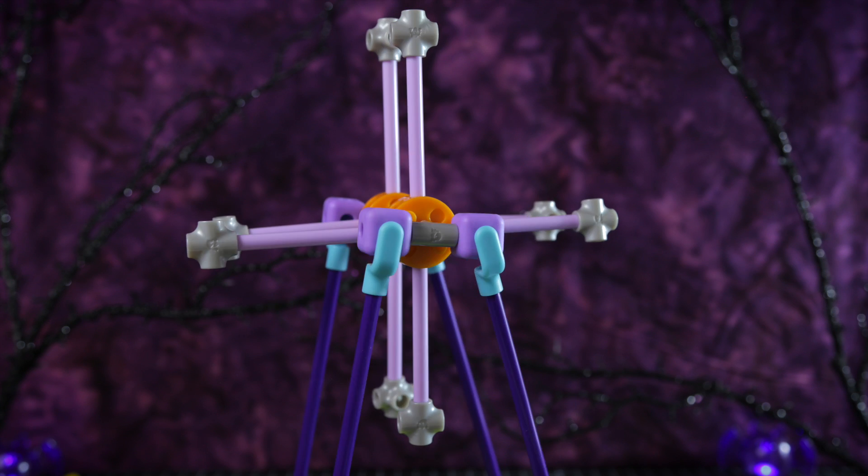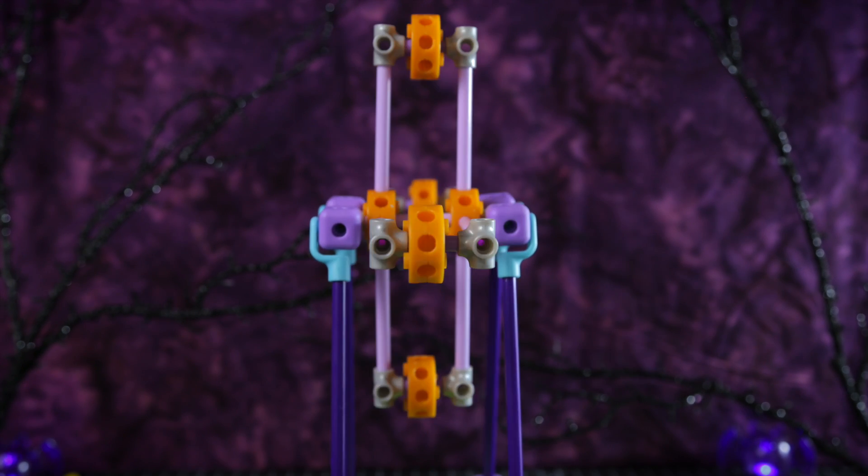Step six: Use four mini axles and the remaining wheel hubs to connect the spokes together.